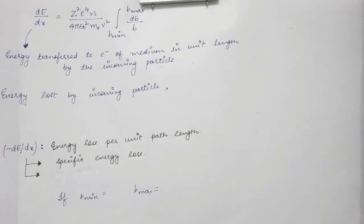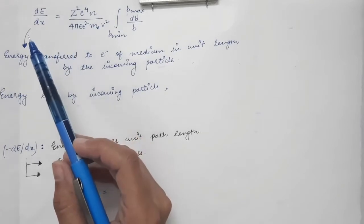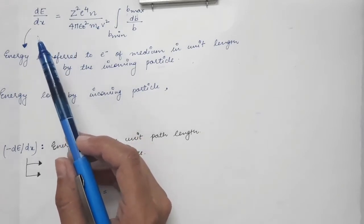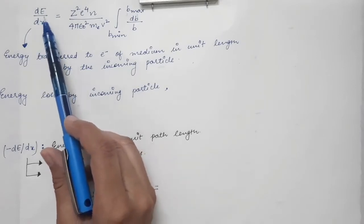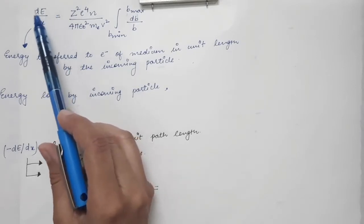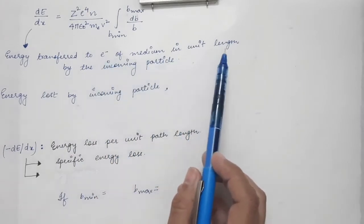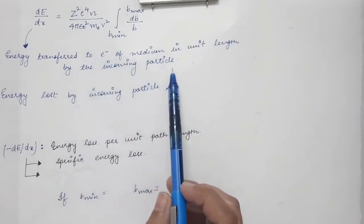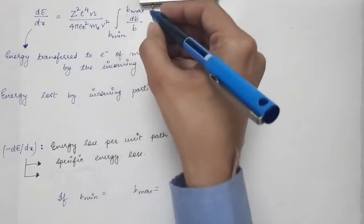In the previous lecture we derived the expression for the amount of energy transferred to electrons in the medium when a heavy charged particle travels a unit path length inside the medium. The expression dE/dx gives us the energy transferred to the electrons of the medium in unit length by the incoming heavy charged particle.